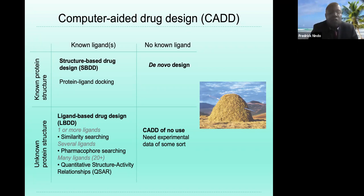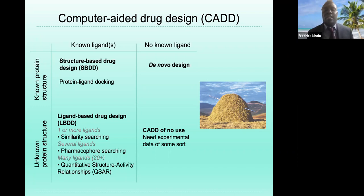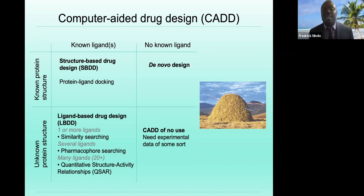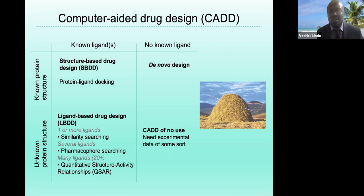You will do pharmacophore searching, which involves many ligands, and then proceed to what we call quantitative structure-activity relationship. If you have a non-protein structure and no known ligand, your computer-aided drug design will be of no use — you need to first do an experiment in the lab, and if you see some leads, you can modify and bring it to the computer.